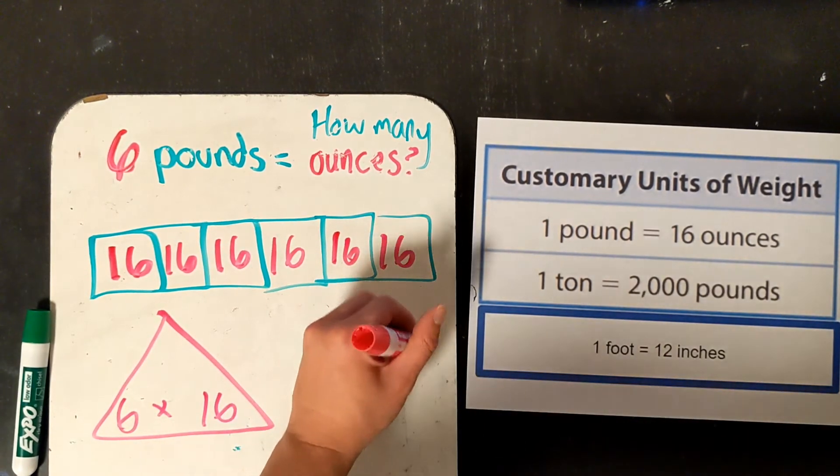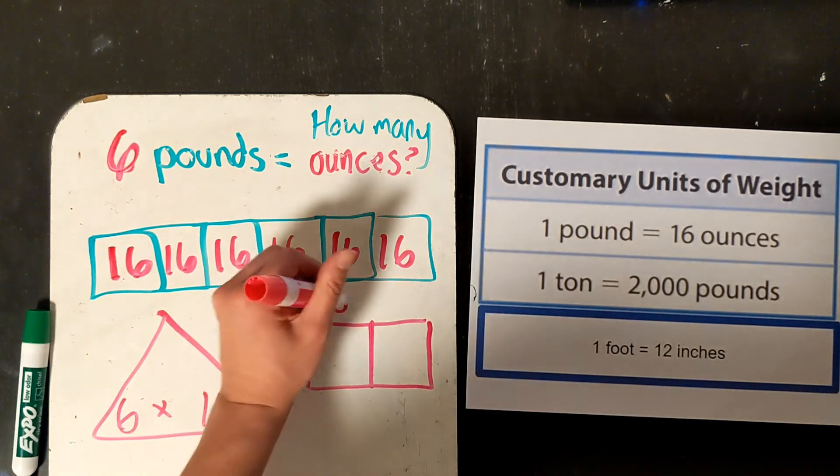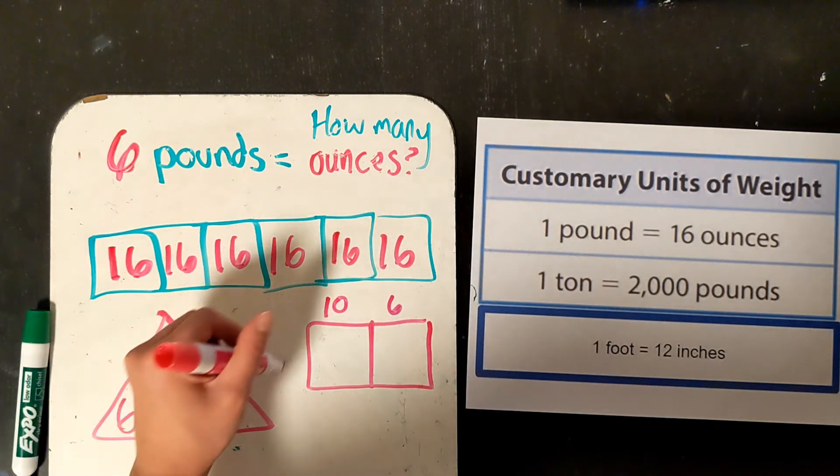This time let's do an area model. If you used a different strategy, that's fine. This is what our area model looks like. 10 plus 6 times 6.